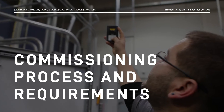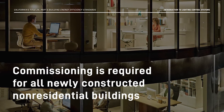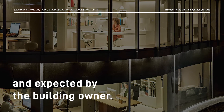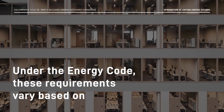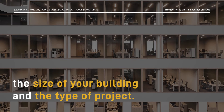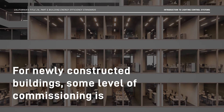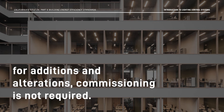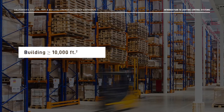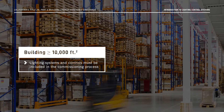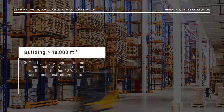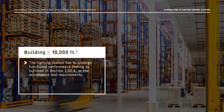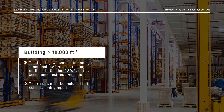Moving on to commissioning requirements. Commissioning is required for all newly constructed non-residential buildings to ensure that the controls operate as planned and expected by the building owner. Under the energy code, these requirements vary based on the size of your building and the type of project. For newly constructed buildings, some level of commissioning is always required for compliance, but for additions and alterations, commissioning is not required. If your newly constructed building is 10,000 square feet or larger, lighting systems and controls must be included in the commissioning process. The lighting system has to undergo functional performance testing as outlined in Section 130.4, and the results must be included in the commissioning report.